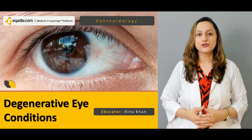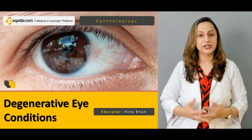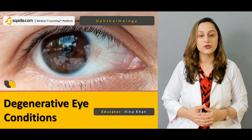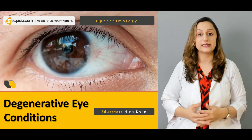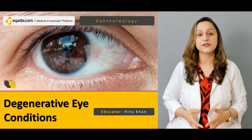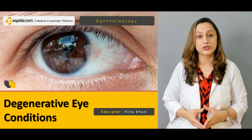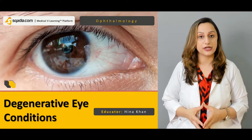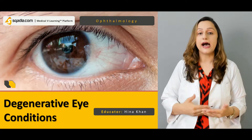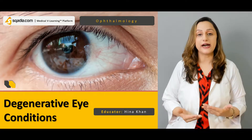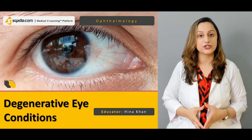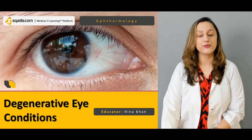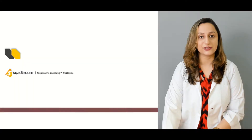We've already gone through the infectious states of the conjunctiva and how we can diagnose these infectious states, and then these degenerative conditions can also isolatedly arise in a particular patient. The etiological factors for the development of these conditions are quite interesting, and we're going to briefly discuss them in this lecture.